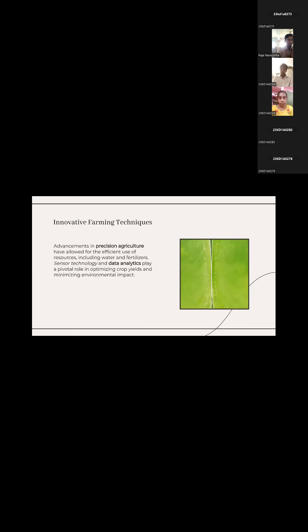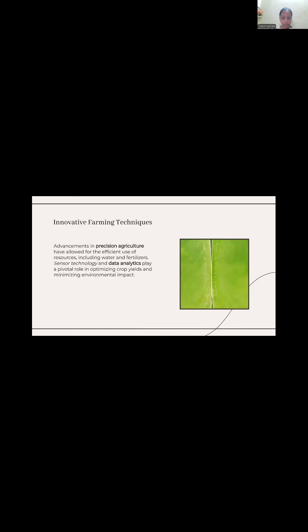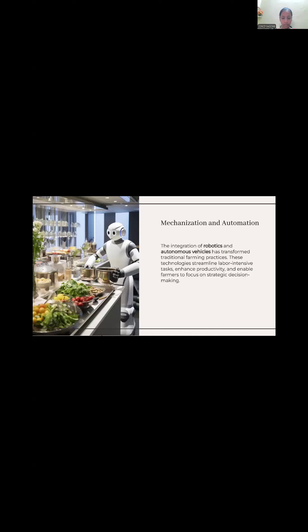Here is slide three — innovative farming techniques. Several techniques are used in farming to reduce your work, workers, and time. Slide three — mechanization and automation: nowadays farmers are not using traditional practices; rather they are using machines, so we can increase productivity and save time. Finally, conclusion: there are many advantages and disadvantages of machines used in agriculture.